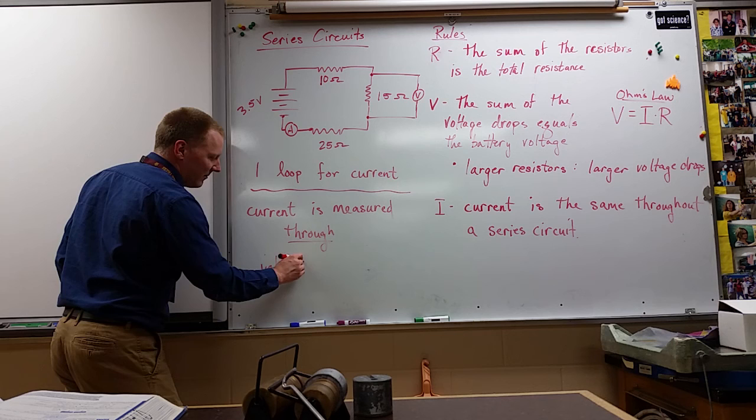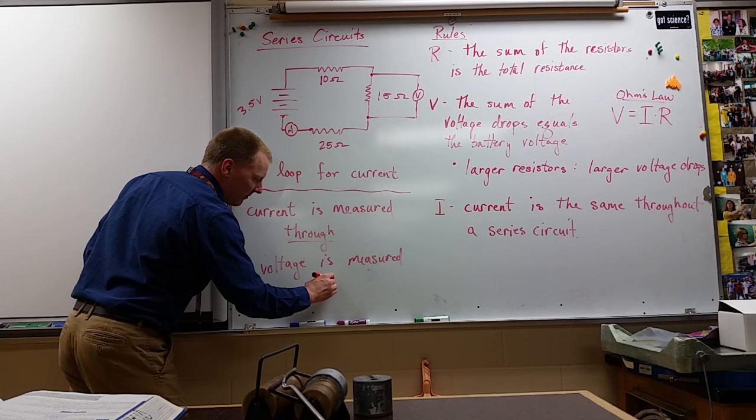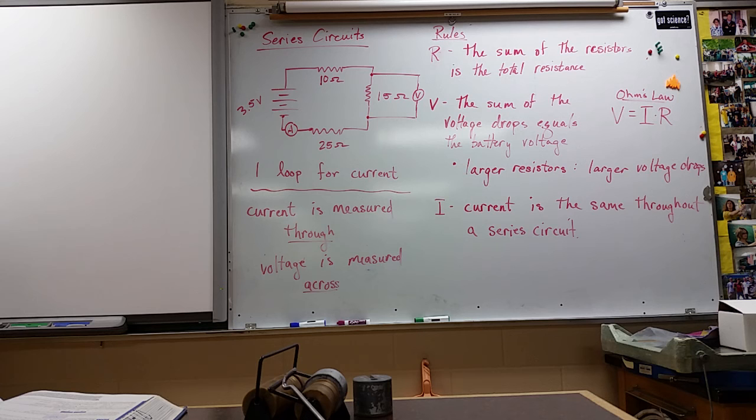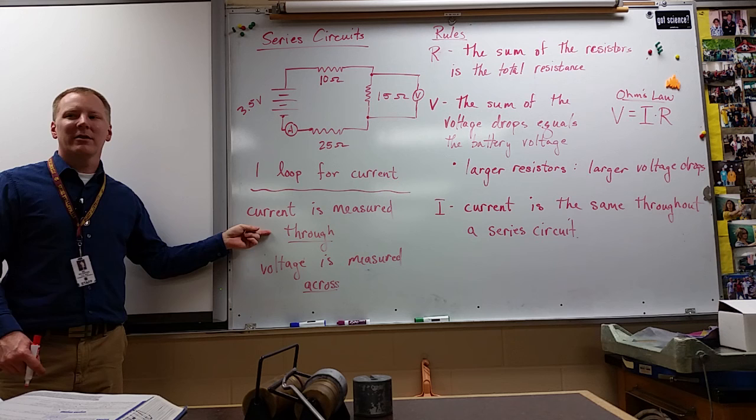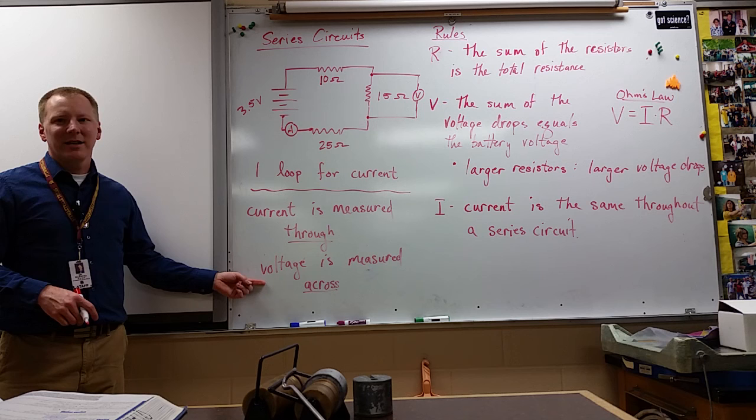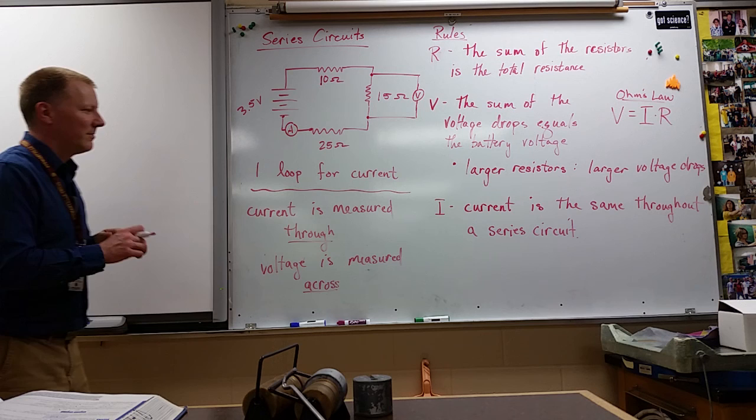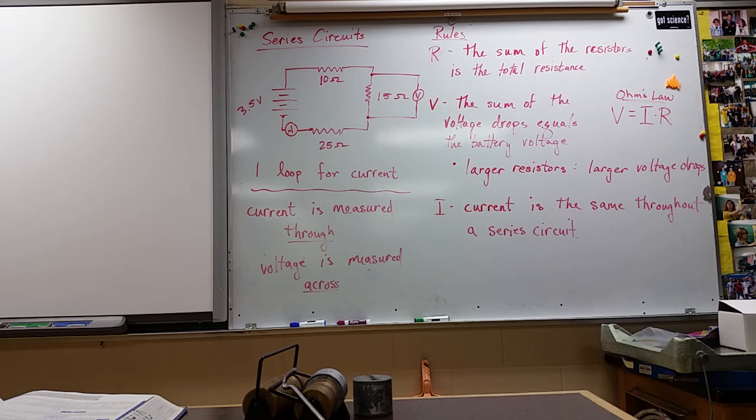So current is measured through a circuit or object. Voltage is measured across. If you think of this sort of like flowing water is often used as an analogy for flowing electricity. If you want to know how fast the current of water is flowing, you need something down in the water. Maybe you have a turbine or something turning like that. If you want to get across it, you're going to have to build a bridge. So voltage is like a bridge from this point to that point. But current gets measured going through. That's series circuits. Does anyone have any questions that they want to address on one of these points before I erase it?